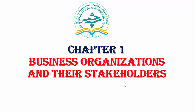The topics in the first chapter are: 1. Purpose of Business Organizations, 2. Types of Business Organization, 3. Stakeholder Goals and Objectives. We are starting with the first one.